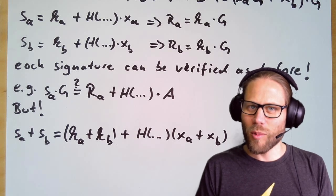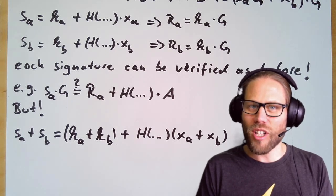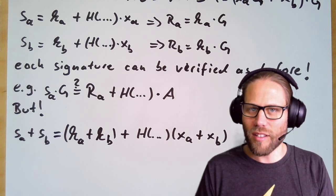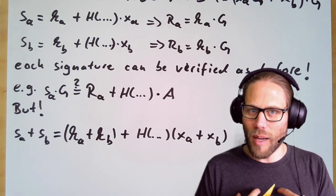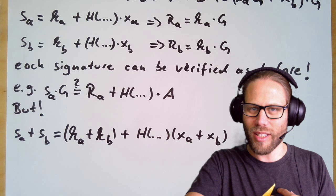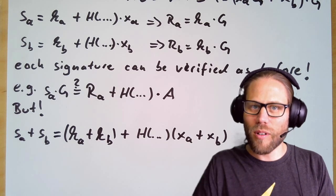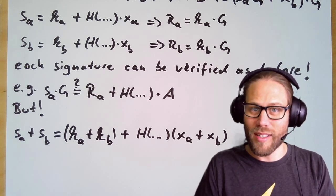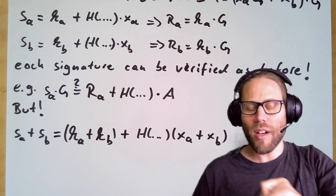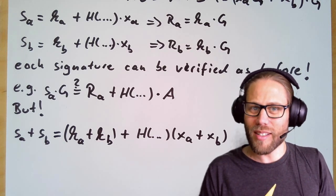When we add the s values of our signature equation, what we're actually doing is adding two private keys. And the thing is, in a multi-signature setting we should not exchange private keys. If you and me create a multi-signature address, I should keep my private key and you should keep your private key. And in no circumstance should we exchange private keys.